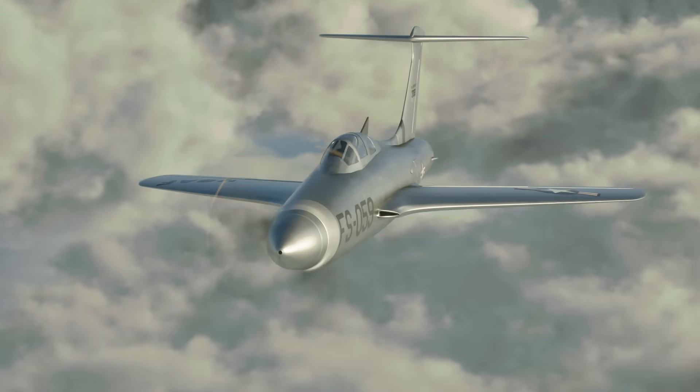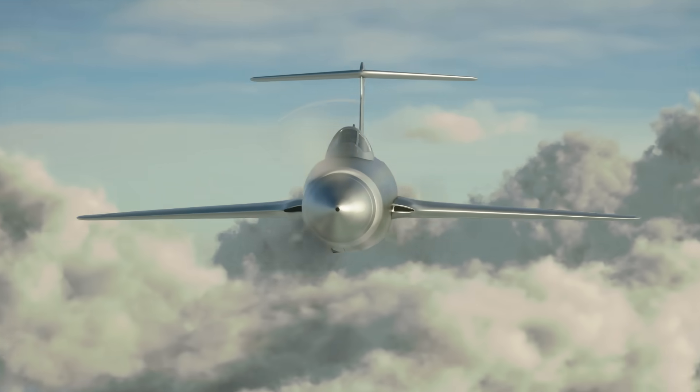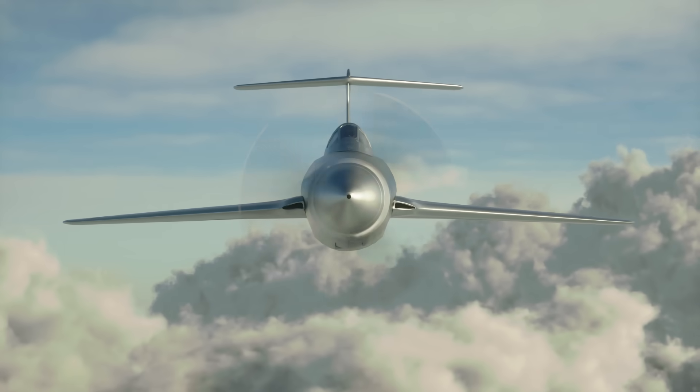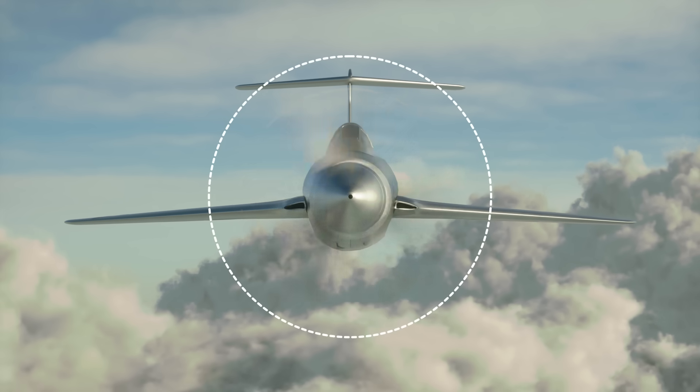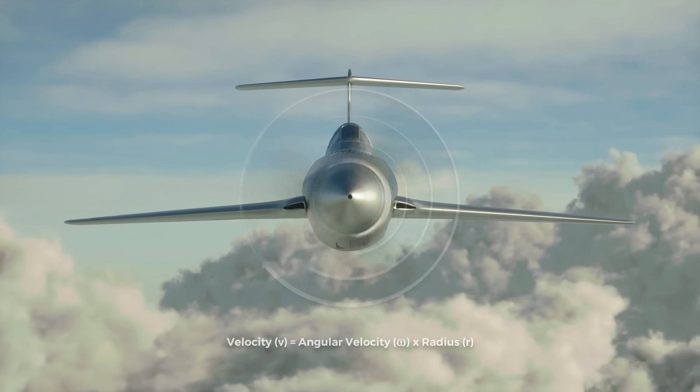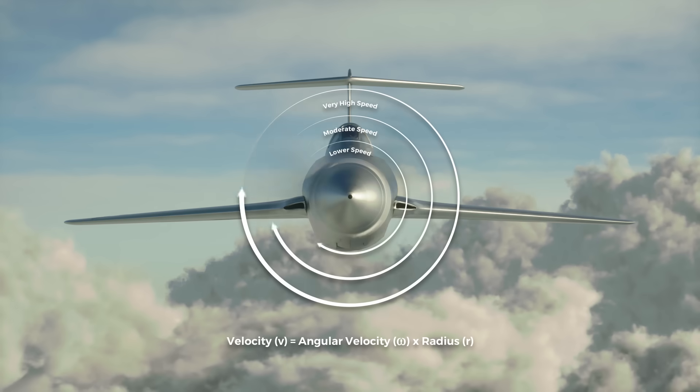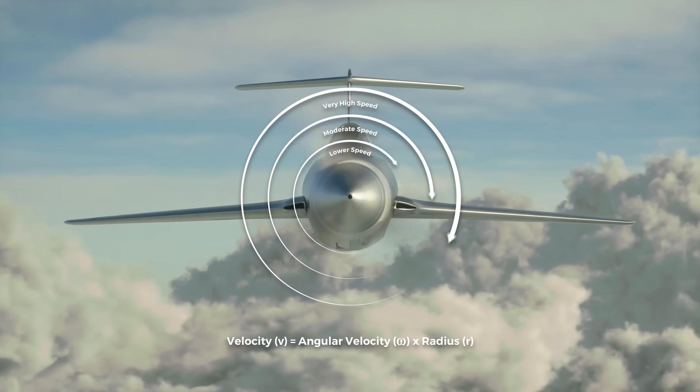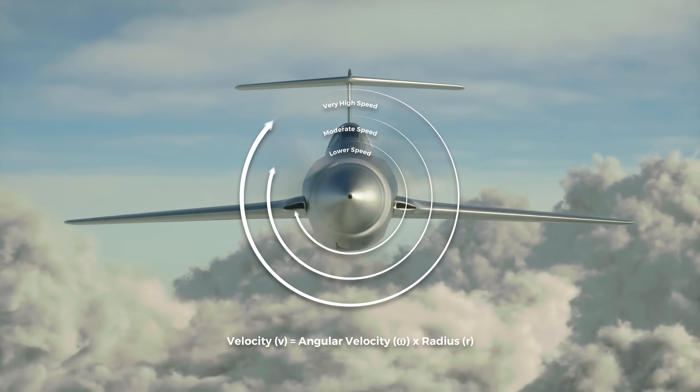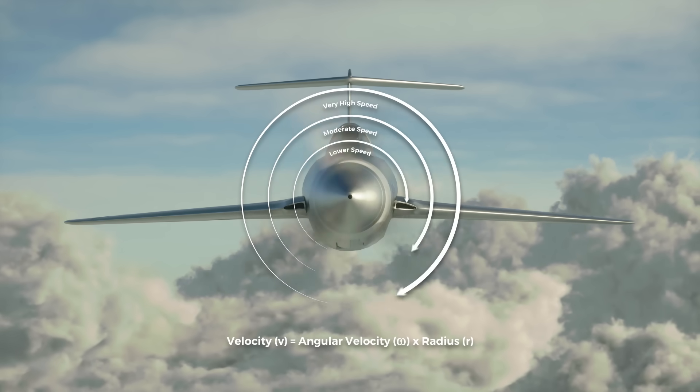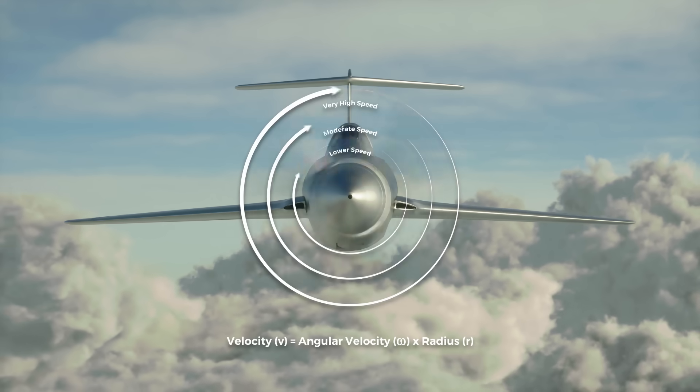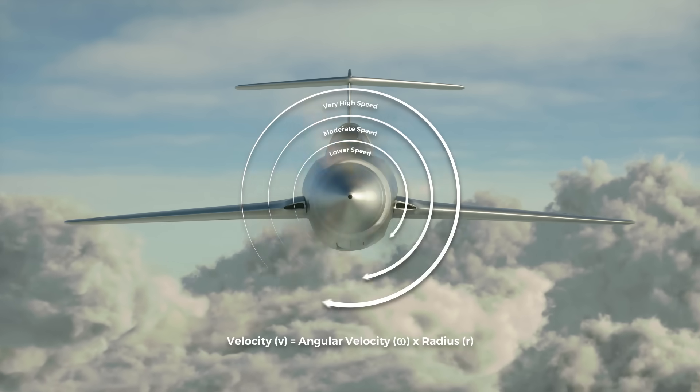For this reason, the supersonic propeller of the Thunderscreech was much shorter in length, effectively delaying the shockwave formation for as long as possible, by reducing the circumference the tip needs to travel during a single rotation. This reduces the tip velocity. A propeller with half the radius will have half the tip velocity, even if it is spinning at the same angular velocity.